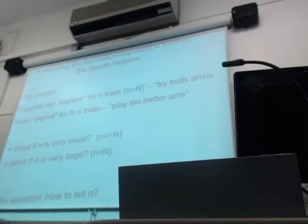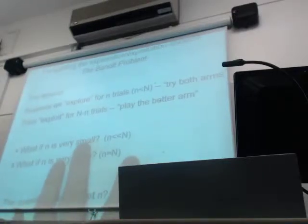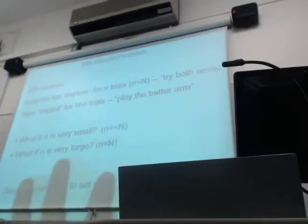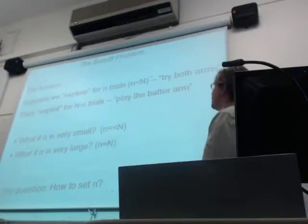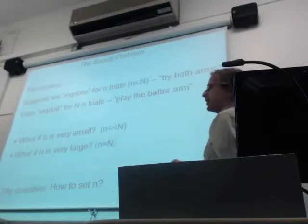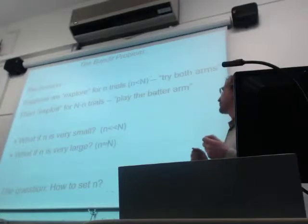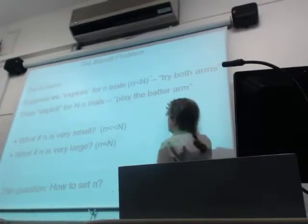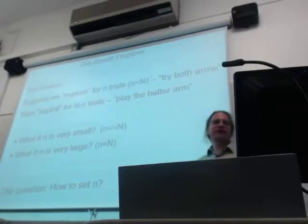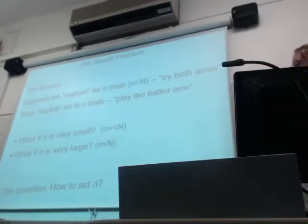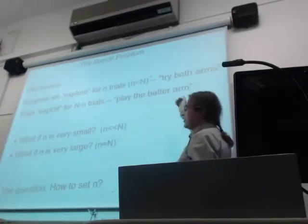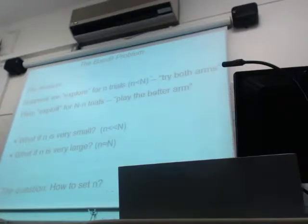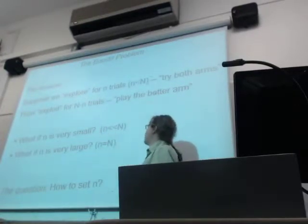The model we set up is: you want to decide which is the better machine to take a risk on. We'll explore for some small n trials — maybe trying each arm once for every two trials. After those small n trials, we look at which slot machine had the best payoff and then play that arm. There are trade-offs if we choose n very small or very large.